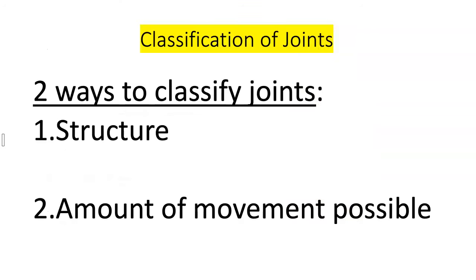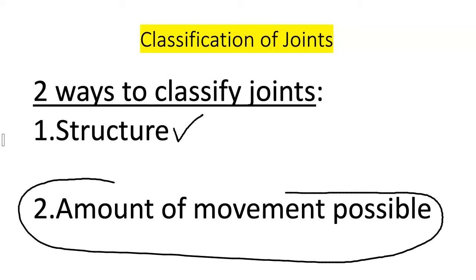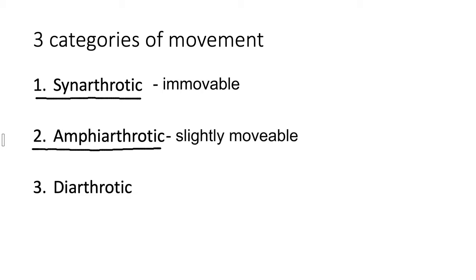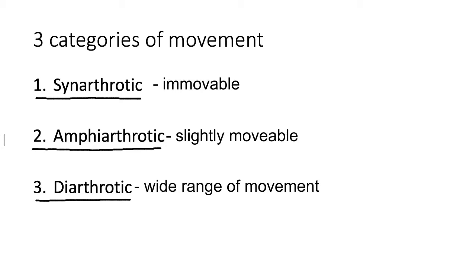Now let's talk about how joints are classified based on the movement that's possible. There are three categories. One type is synarthrotic — the bones are immovable. Compared to amphiarthrotic, where a slight amount of movement is possible. And diarthrotic, which is a freely movable joint.